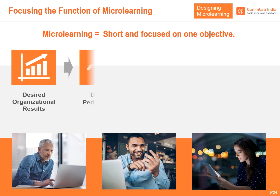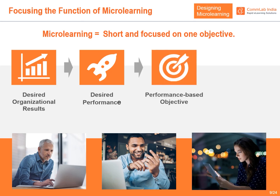We take the results and translate those to desired performance — what people have to be able to do to achieve the results. We then select and focus on the performance, looking for a performance-based objective characterized by an action verb, something they are actually doing as part of their job and job responsibilities.